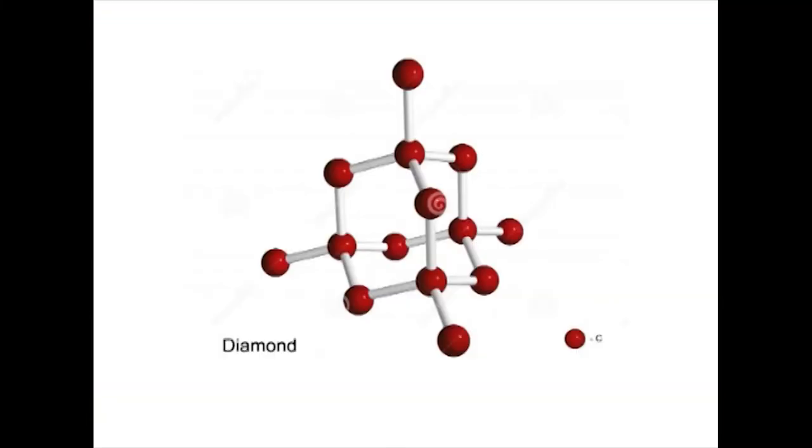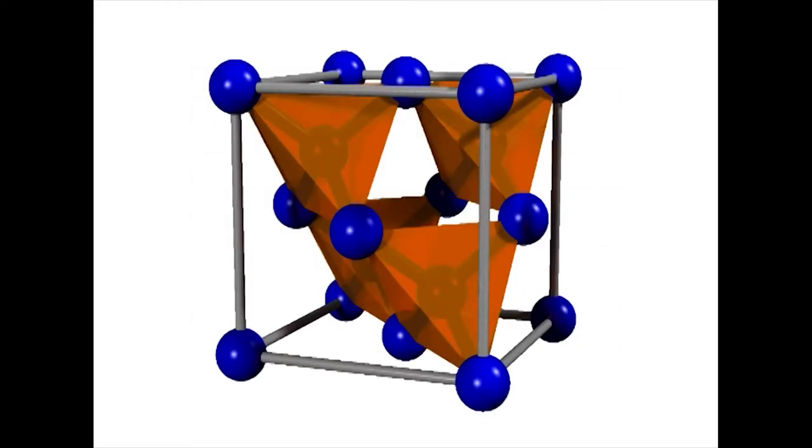The vast majority of gems are minerals. Mineral species are defined by a combination of their chemical makeup and their molecular structure. Chemical makeup refers to the atoms contained within the mineral — diamond, for example, has the simplest chemical makeup with carbon (C) being the only element present, while corundum is composed of just two elements: aluminium and oxygen.